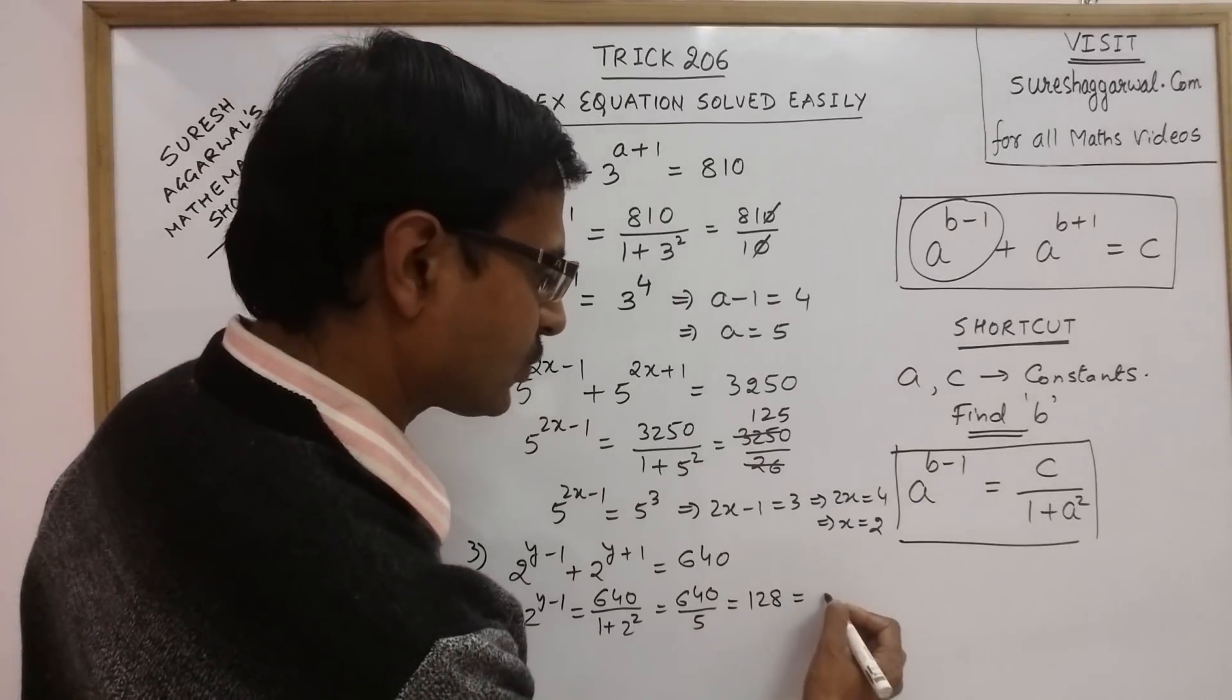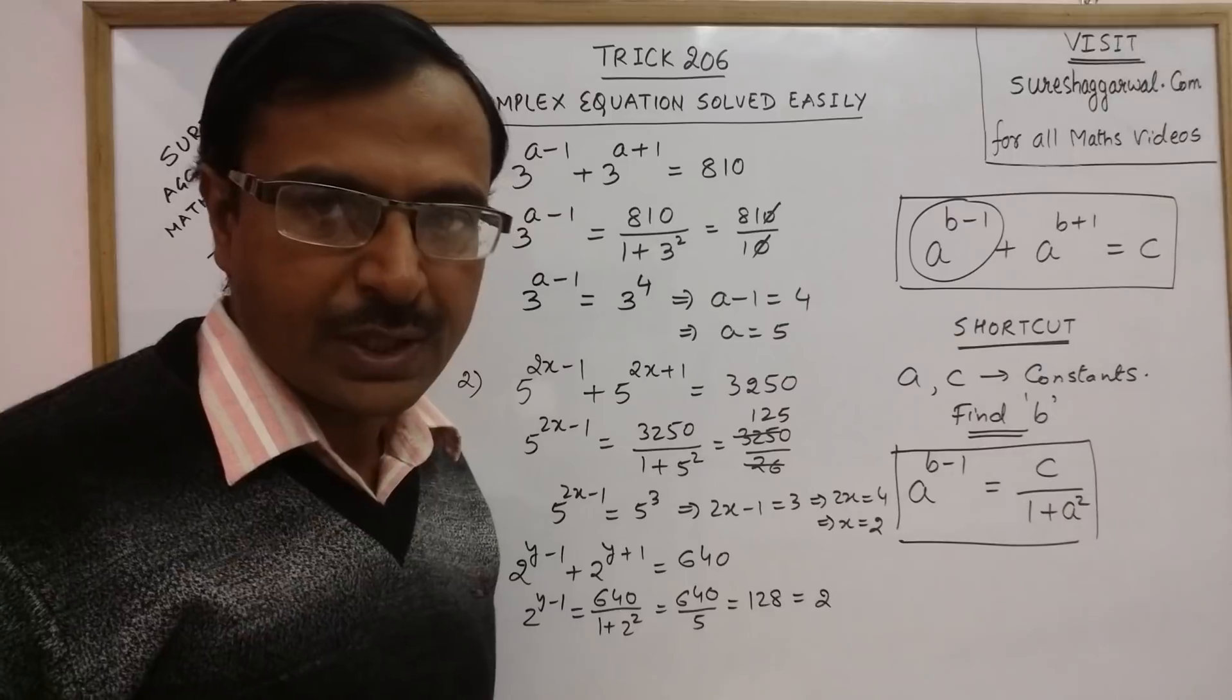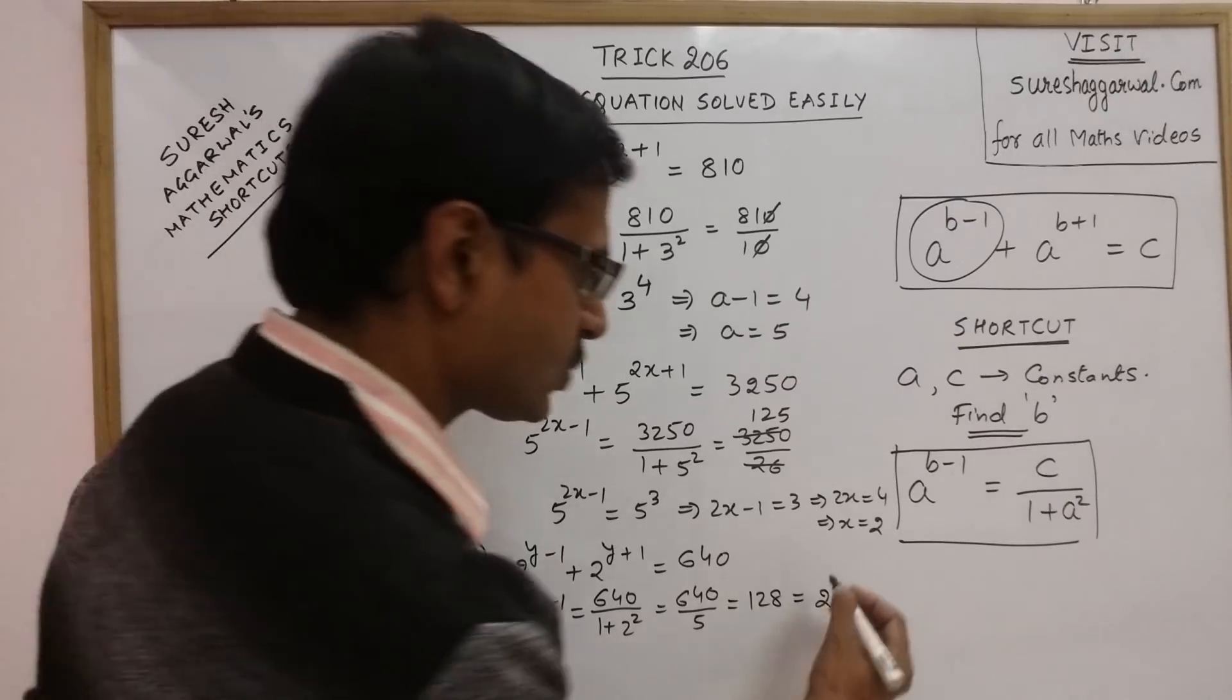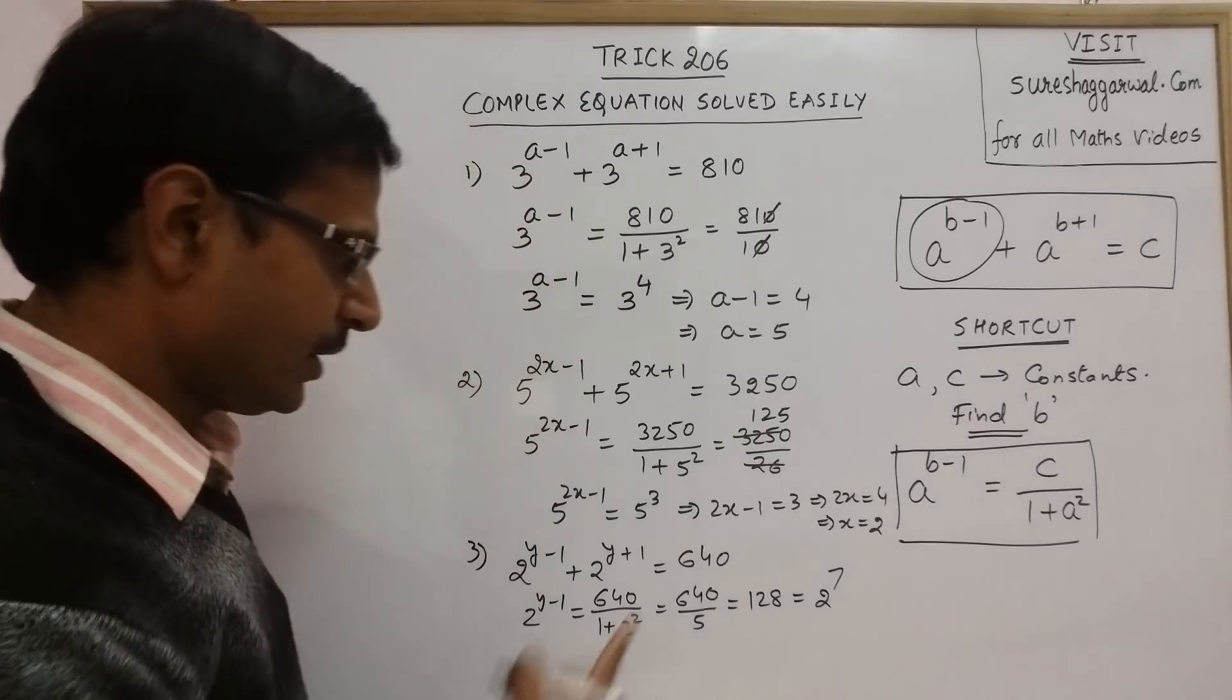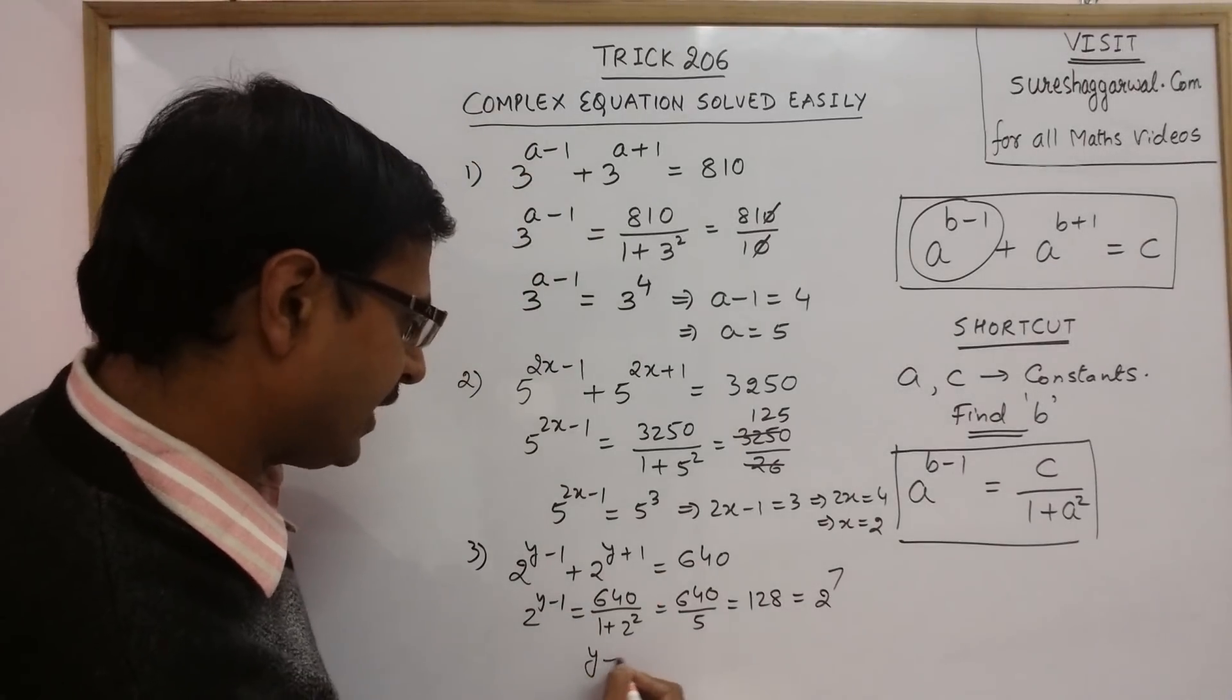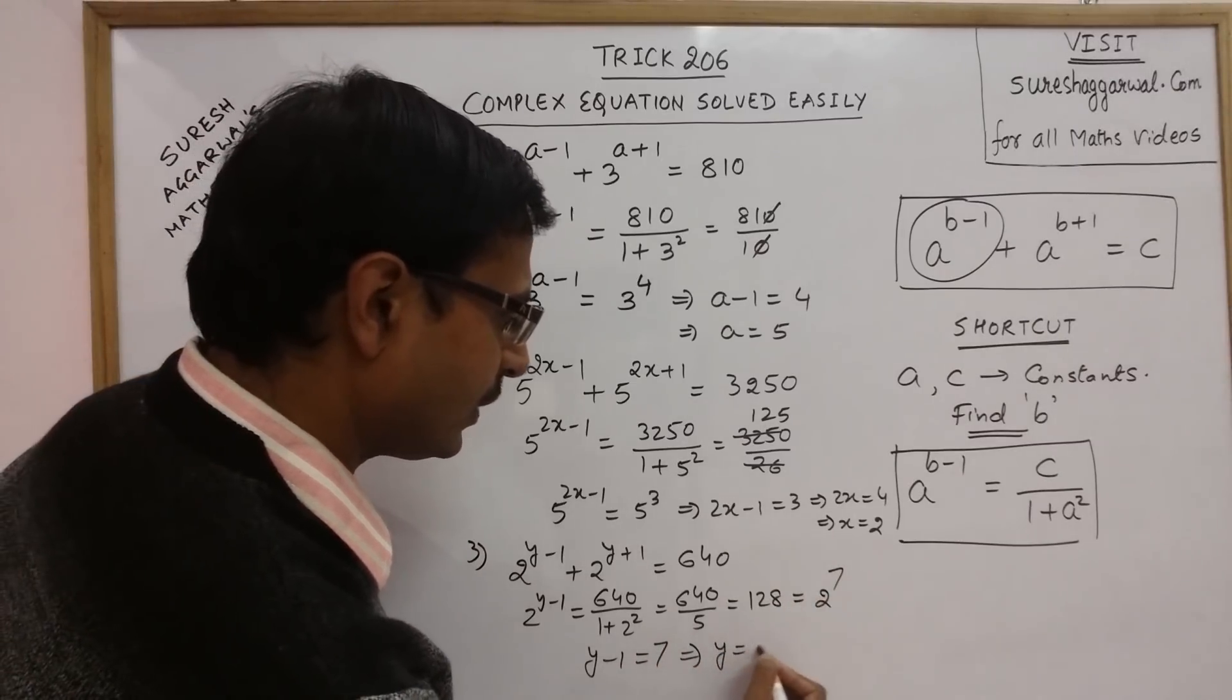Now, 128 is actually 2 raise to power 7. So, now, we have a common base. So, just equate the powers y minus 1 becomes equal to 7. So, y becomes equal to 8.